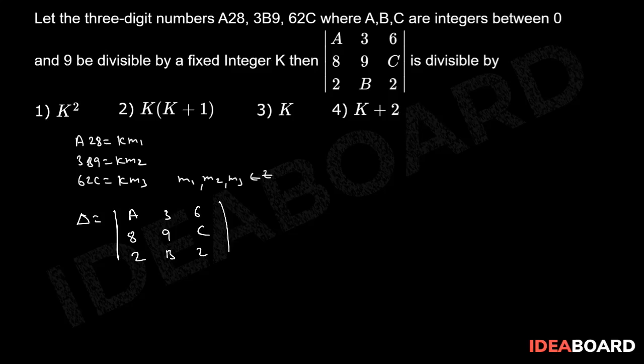Now, let us apply the row operation. Then, R1 implies 100R1 plus 10R3 plus R2. Therefore, we have this value equals to that of A28, 3B9, 62C, 89C, 2B2.